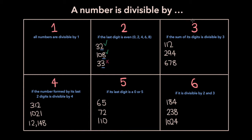A number is divisible by 3 if the sum of its digits is divisible by 3. So for example, for the number 112, you're going to sum up its digits: 1 plus 1 plus 2, which is 4. And since 4 is not divisible by 3, 112 isn't divisible by 3 either. Now for the number 294, you take the sum of its digits: 2 plus 9 plus 4, which is 15. Now 15 is divisible by 3 — 15 divided by 3 is 5 — and so 294 is divisible by 3.